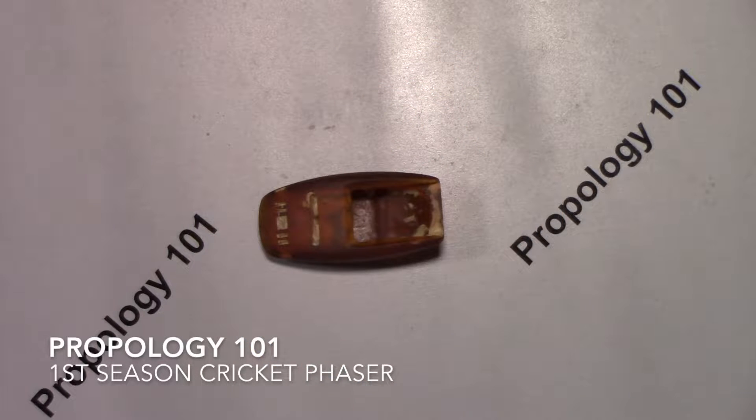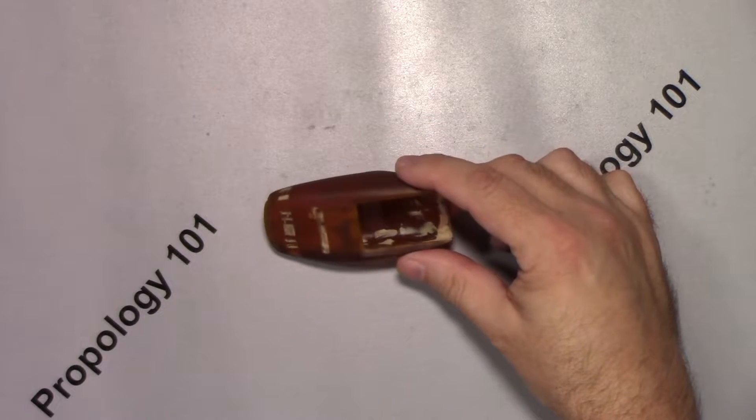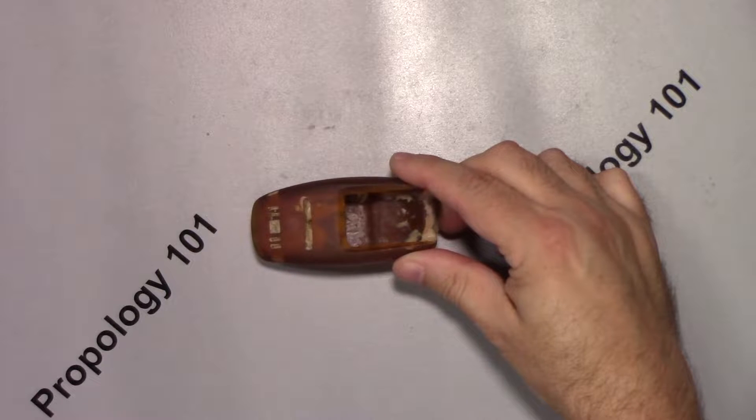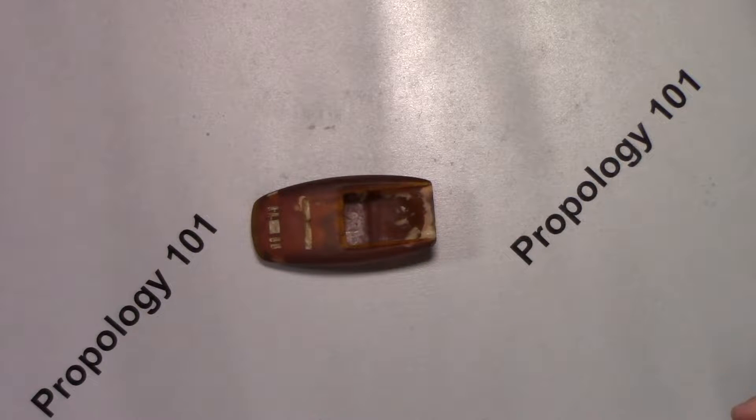Hey guys. So this is a Cricket Phaser. This was originally made by Tom Holmscher, who is also the person who made the tricorder, the Mark VI version, which is resin.